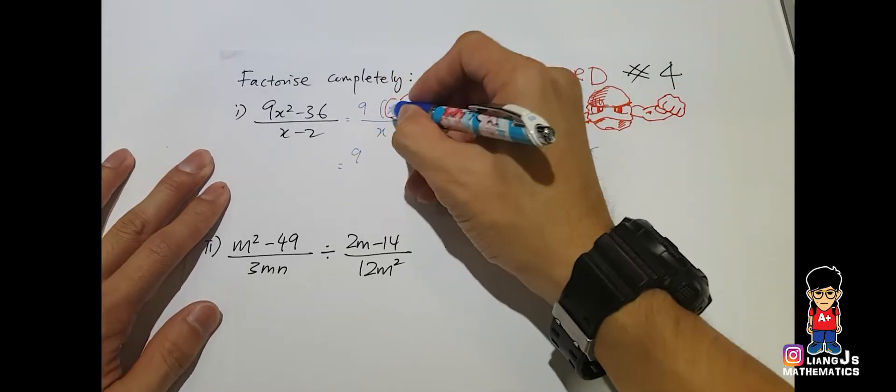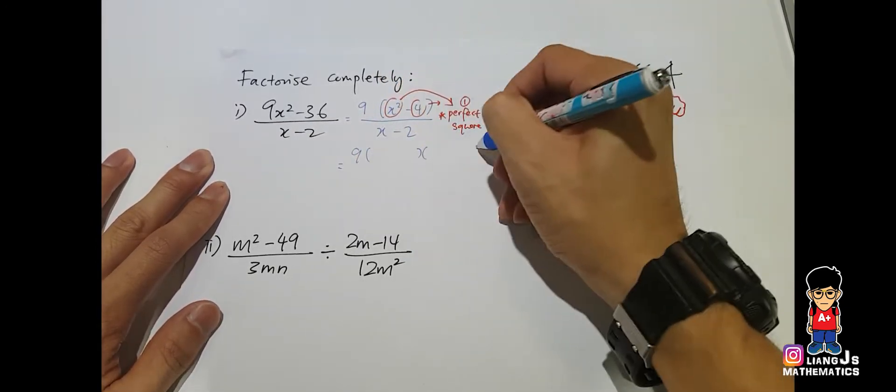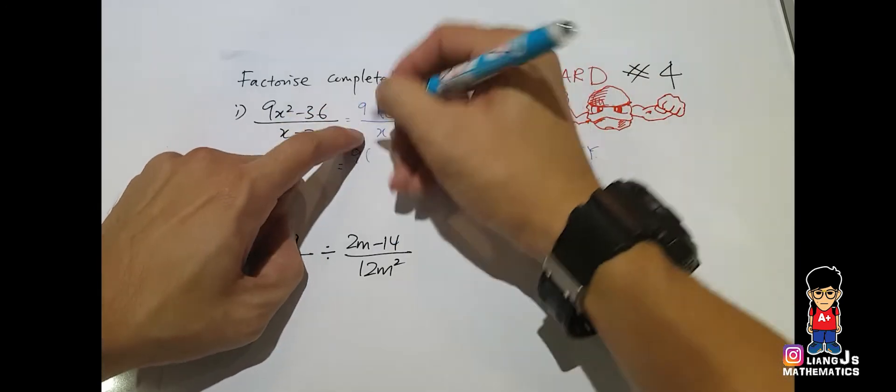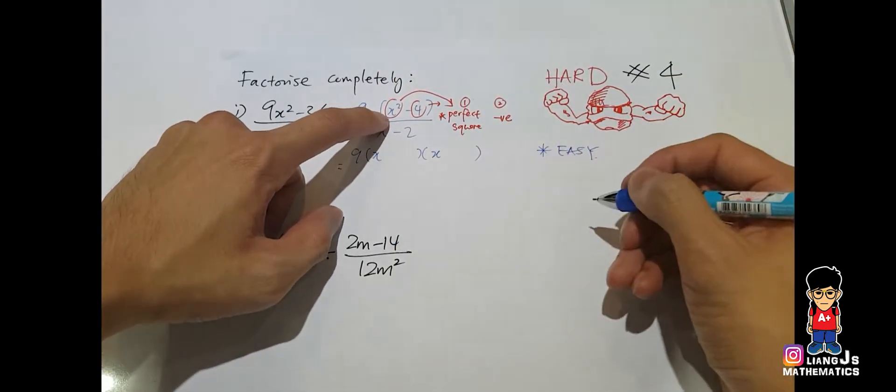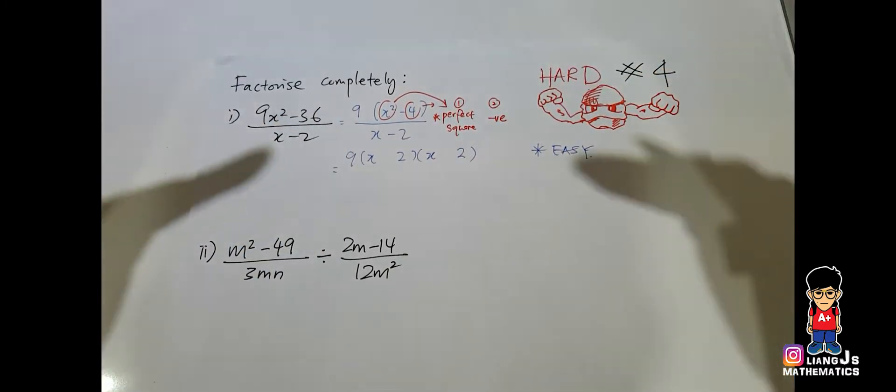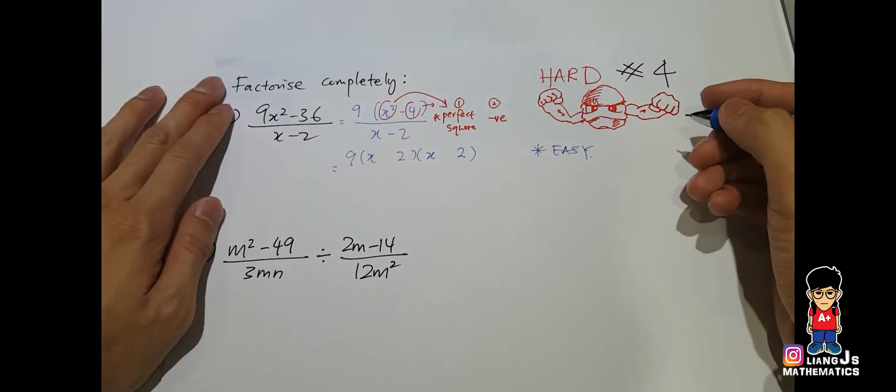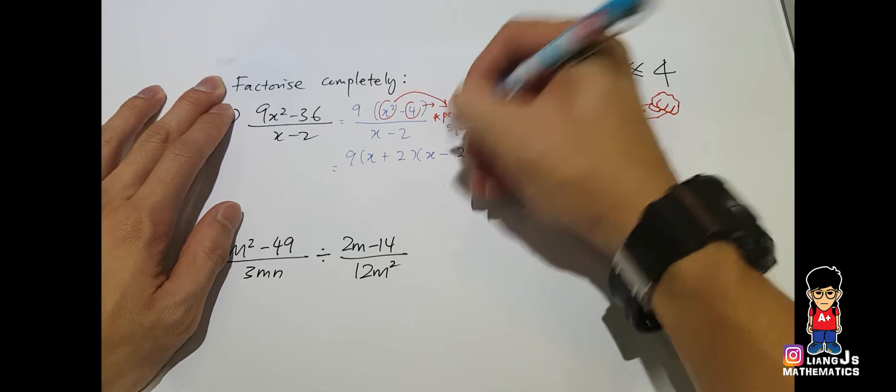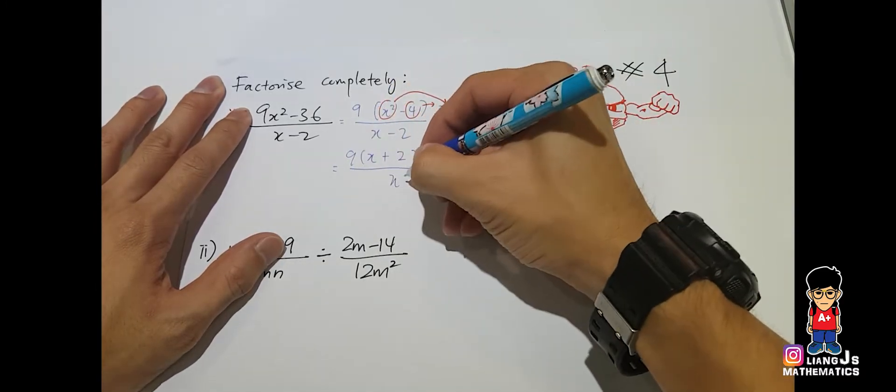Now, so 9. And what happened here is, you will put like two brackets whenever you recognize this. And the x square, you can change to xx because you square it. 4, you square it, you get 2 and 2. And for this kind of perfect square related factorization, you will put 1 plus and 1 minus. Okay, so over x minus 2.